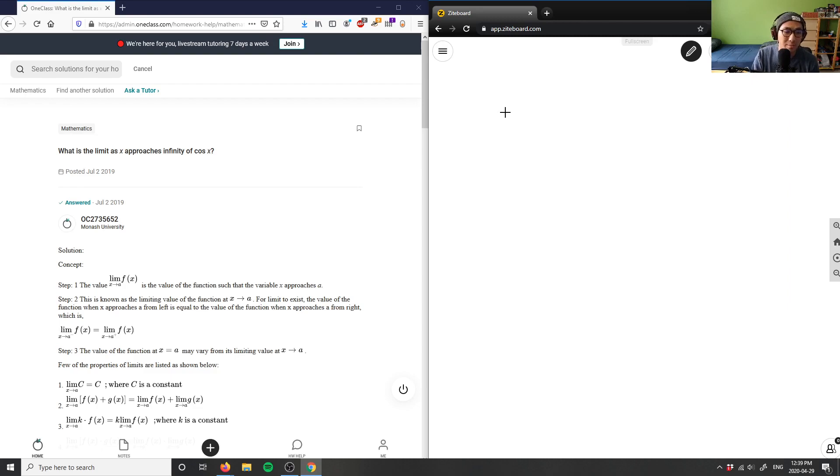Okay, that's number eight. Nine here states: what is the limit as x approaches infinity of cosine x? So the limit, or LIM, as x approaches infinity of cosine x, of cos x here.